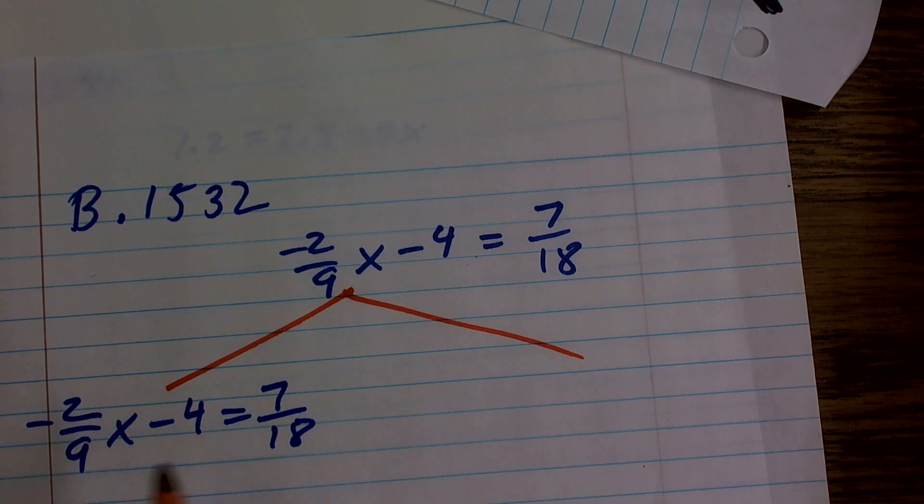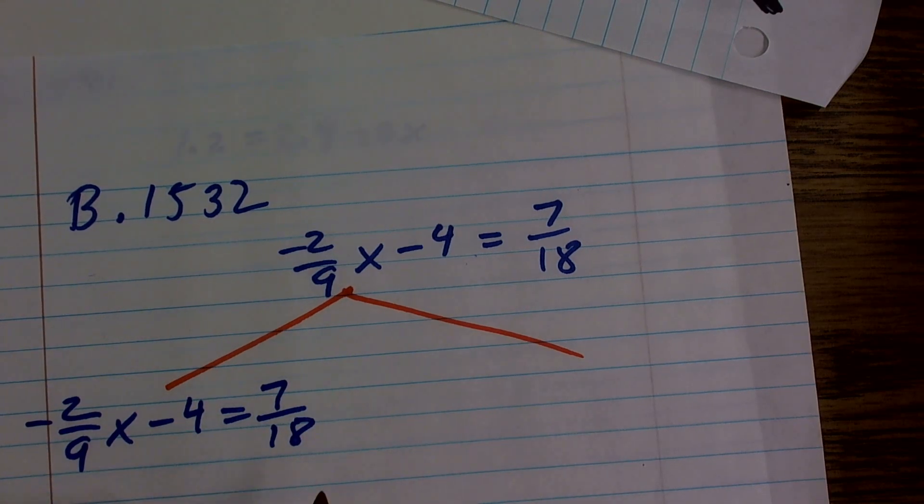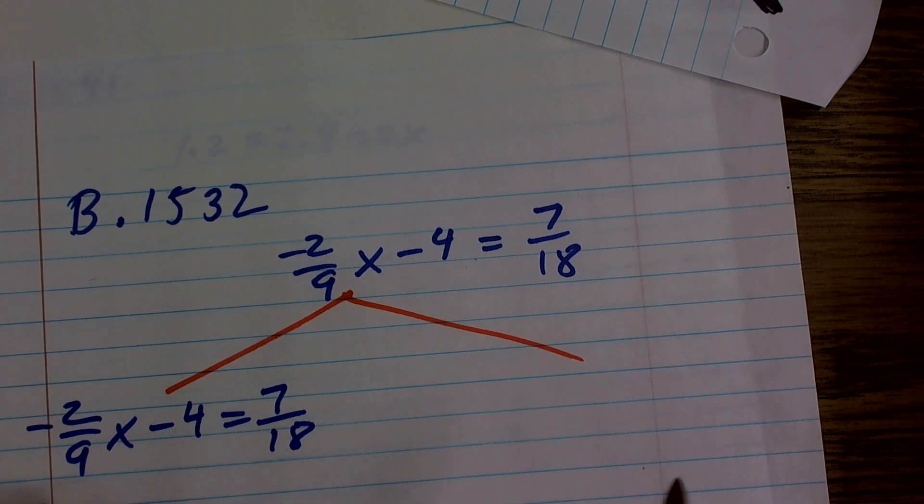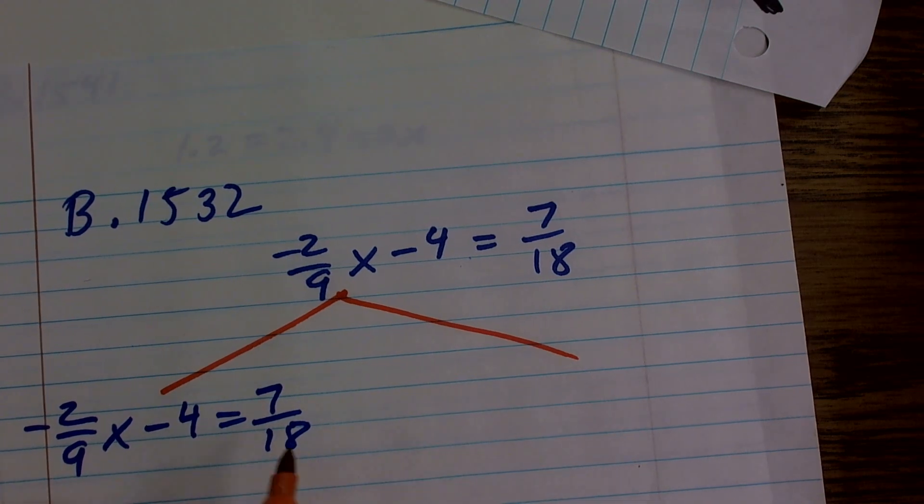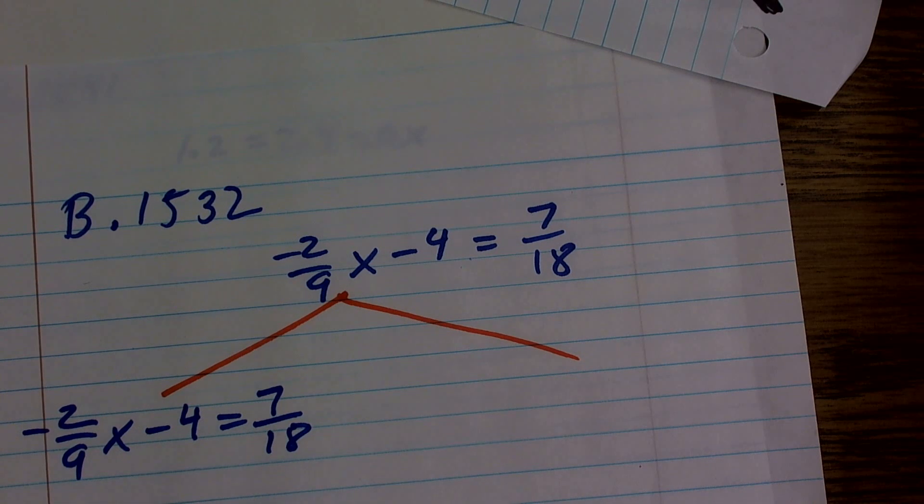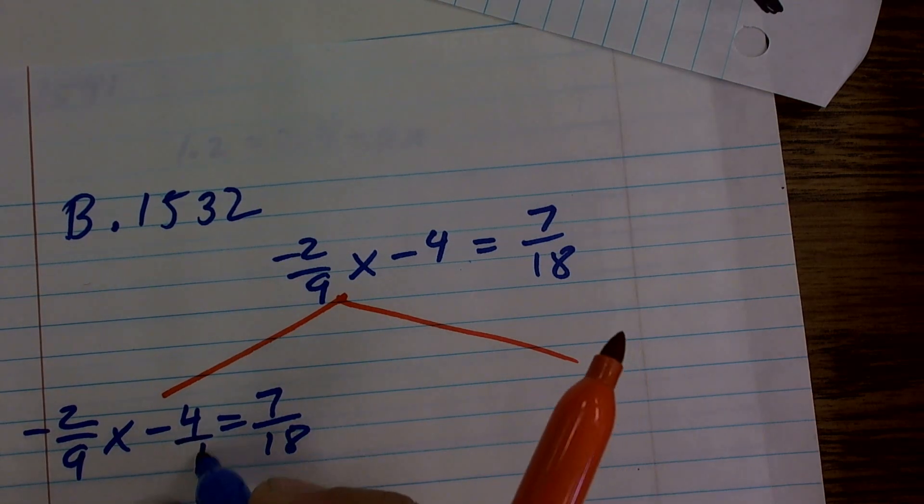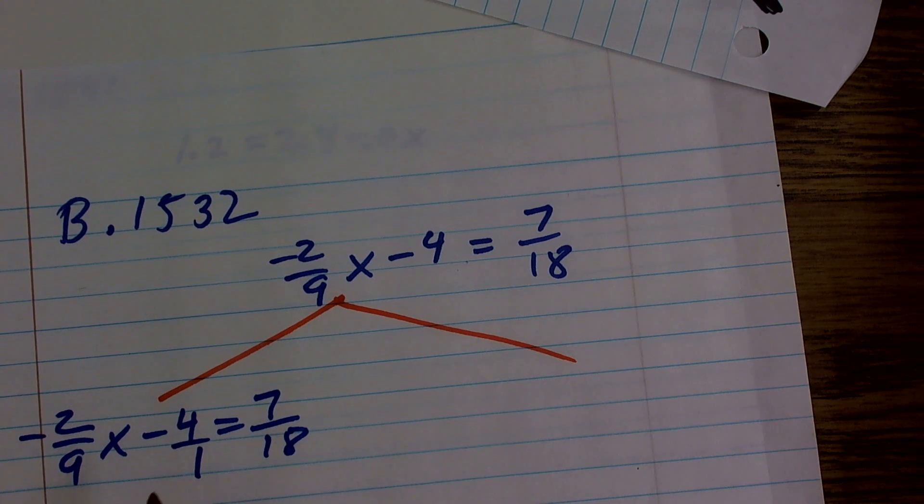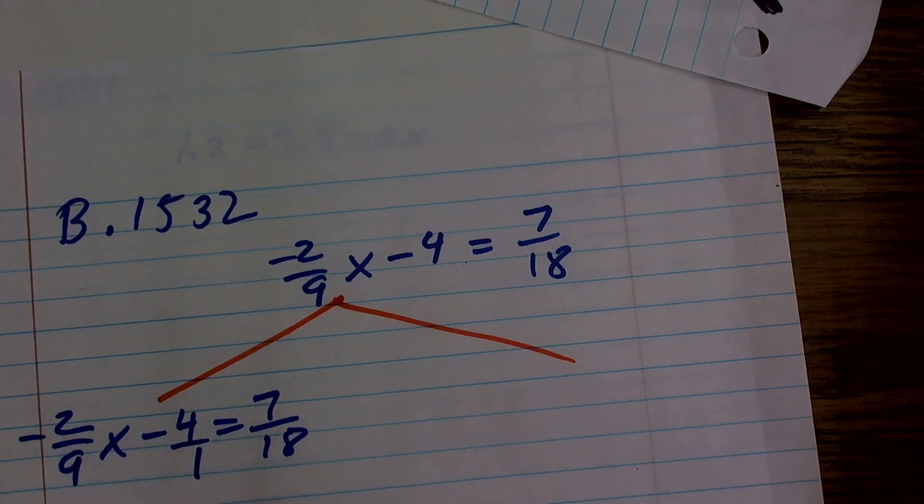However, to get rid of fractions, we need to multiply by the least common multiple of our denominators, which we call the least common denominator. So I take a look at my denominators. And I can rewrite this as a fraction as negative 4 over 1. So I look at what is the common multiple of all three of my denominators. Well, the common multiple is 18.